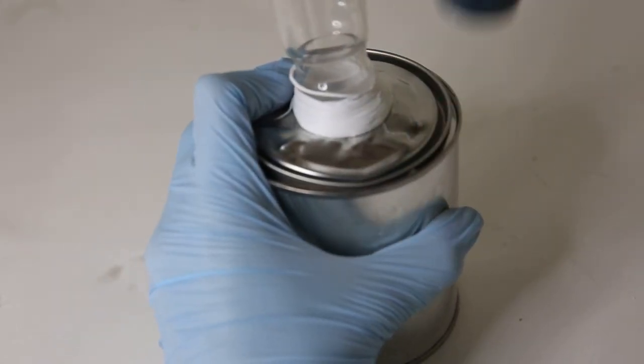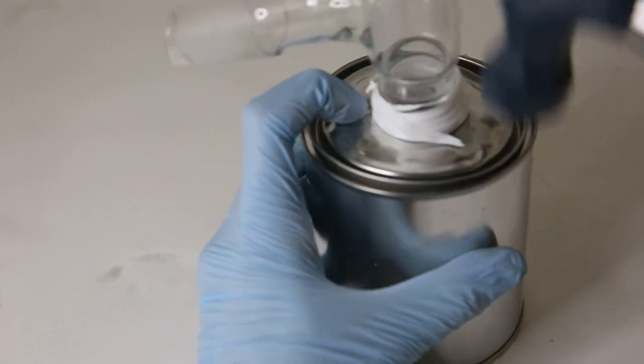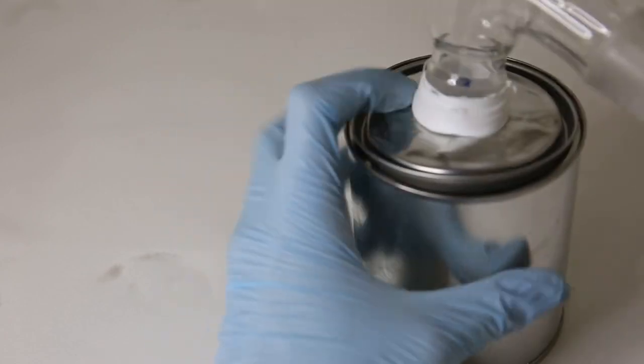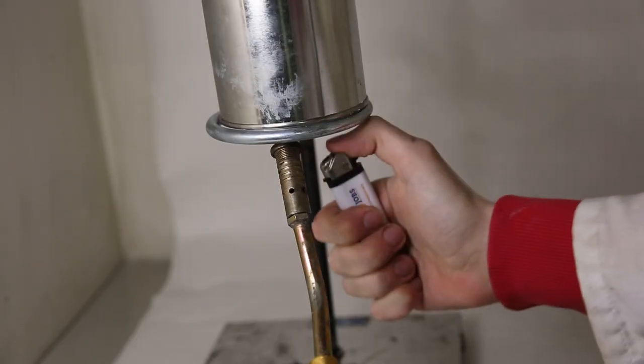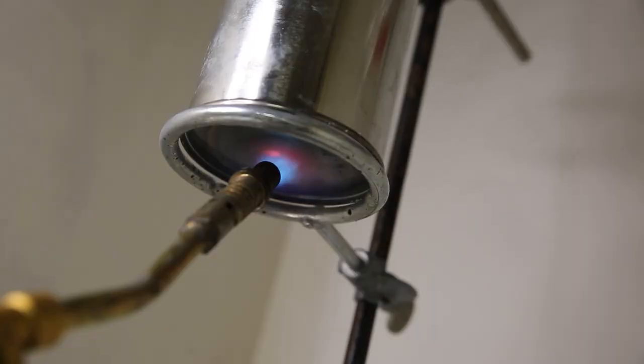After I got most of the powder in I cleaned off the powder that got into the sides, put the lid on top and shut it with a hammer. So now that the vessel is complete I simply attach it to a condenser and start heating the underside with a torch.